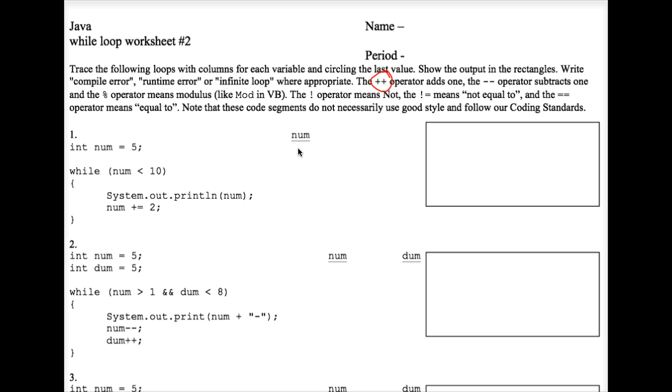Number 1, num equals 5. The control expression is true, so we do iterate through the loop. We system out print num, which is currently equal to 5. We plus equal 2, that is, we add 2 to 5 to make it 7. The closing curly brace tells us to go back up to the top of the while loop, where we see that this time around 7 is indeed less than 10. So again, it's true. We go through the loop.